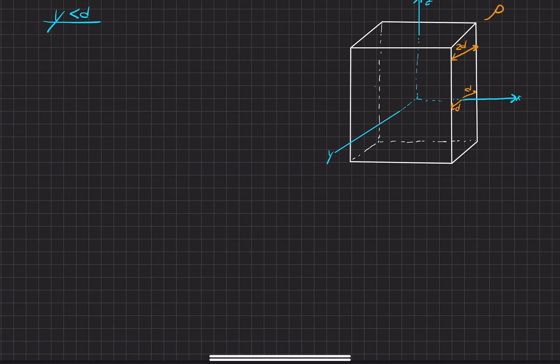In this problem, we were given an infinitely long wall that is infinitely long in the z and x-hat directions, but is finitely thick in the y-hat direction here. And its thickness is at 2d.